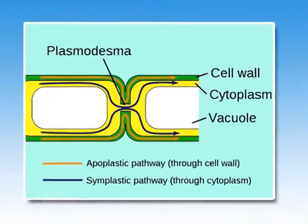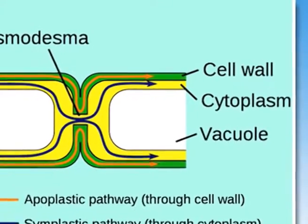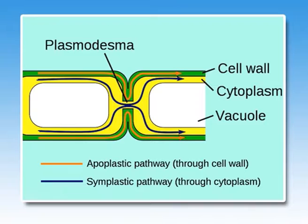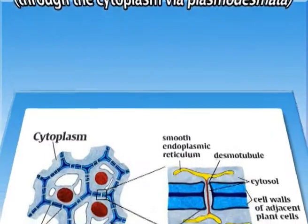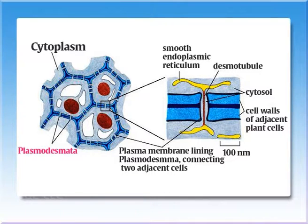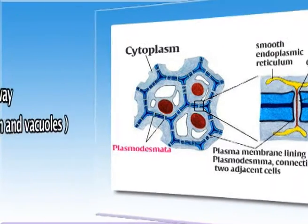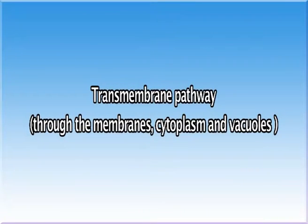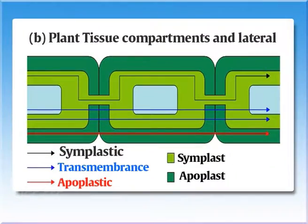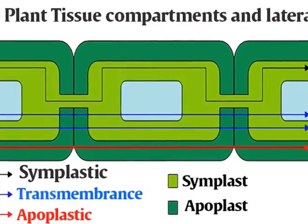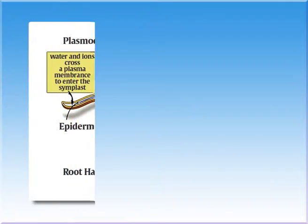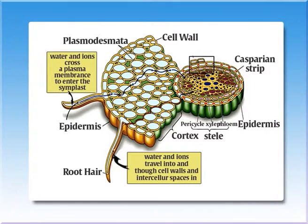The apoplastic pathway is the movement of water from root hairs to xylem through the walls of intervening cells without crossing any membrane or cytoplasm. The second is the symplast pathway through the cytoplasm via plasmodesmata, where water moves through the cytoplasm of adjacent cells via plasmodesmata. Third is the transmembrane pathway through the membranes, cytoplasm, and vacuoles — the movement of water from one cell to another, crossing two membranes while entering and exiting the cells, and also involving transport across the tonoplast.